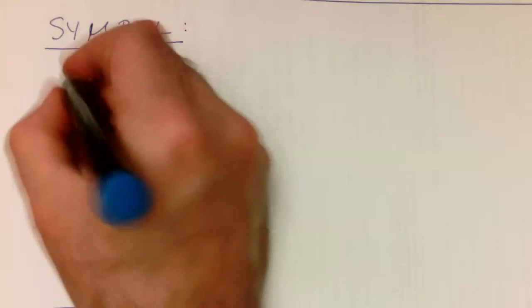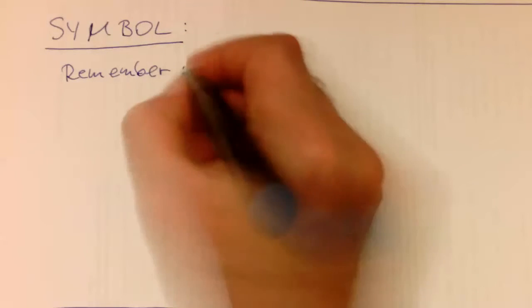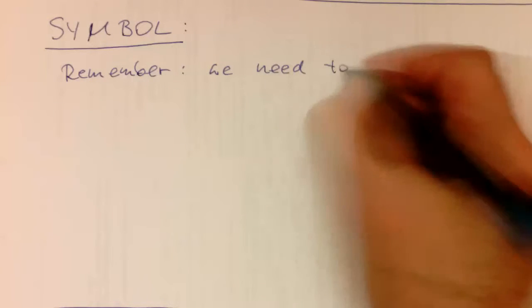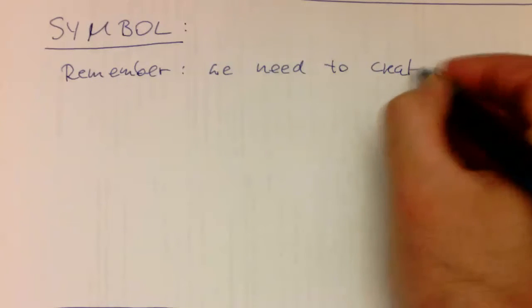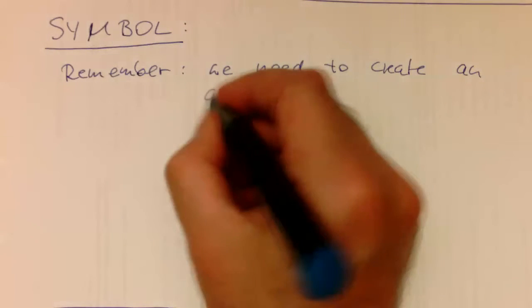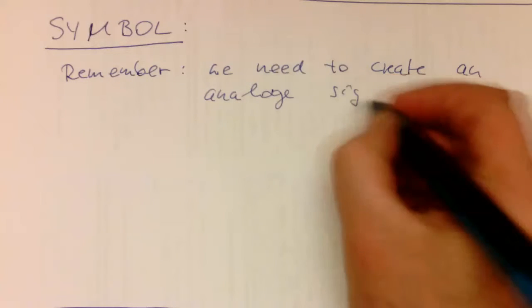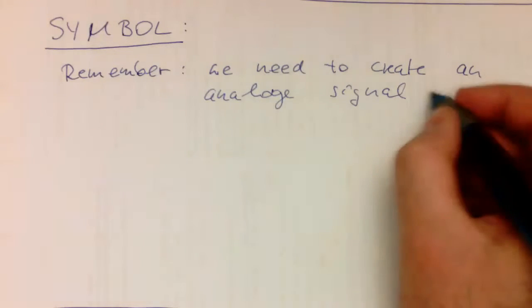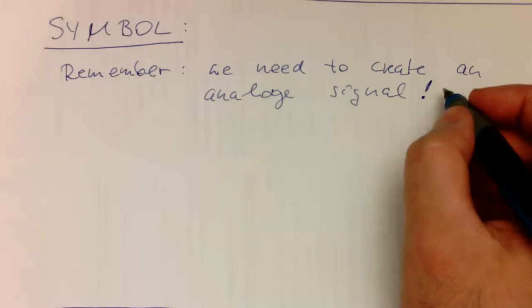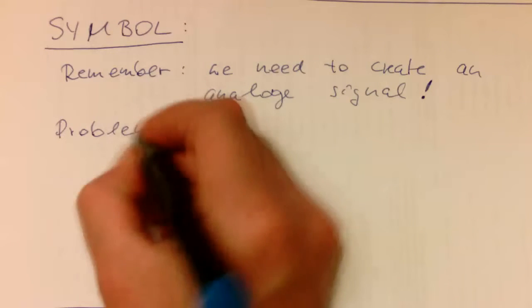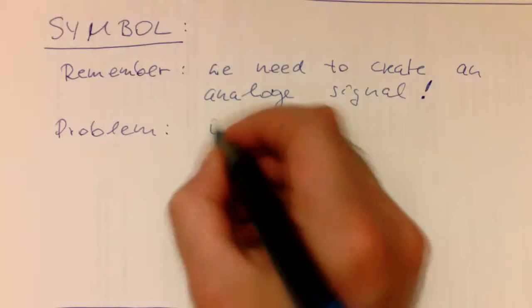So remember, we need to create an analog signal at the end in order to transmit this via RF to the other side, but the problem is, our input is digital.